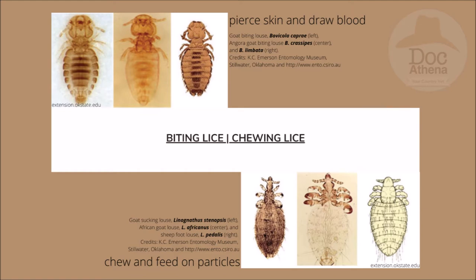The biting lice pierce the skin and draw blood. It's important to know that they drink blood because it might lead to anemia. The different biting lice include the goat-biting louse or Bovicola caprae on the leftmost side, the Angora goat-biting louse or Bovicola crassipes in the middle, and Bovicola limbata on the rightmost part. Thank you to the Casey Emerson Entomology Museum for these photos.